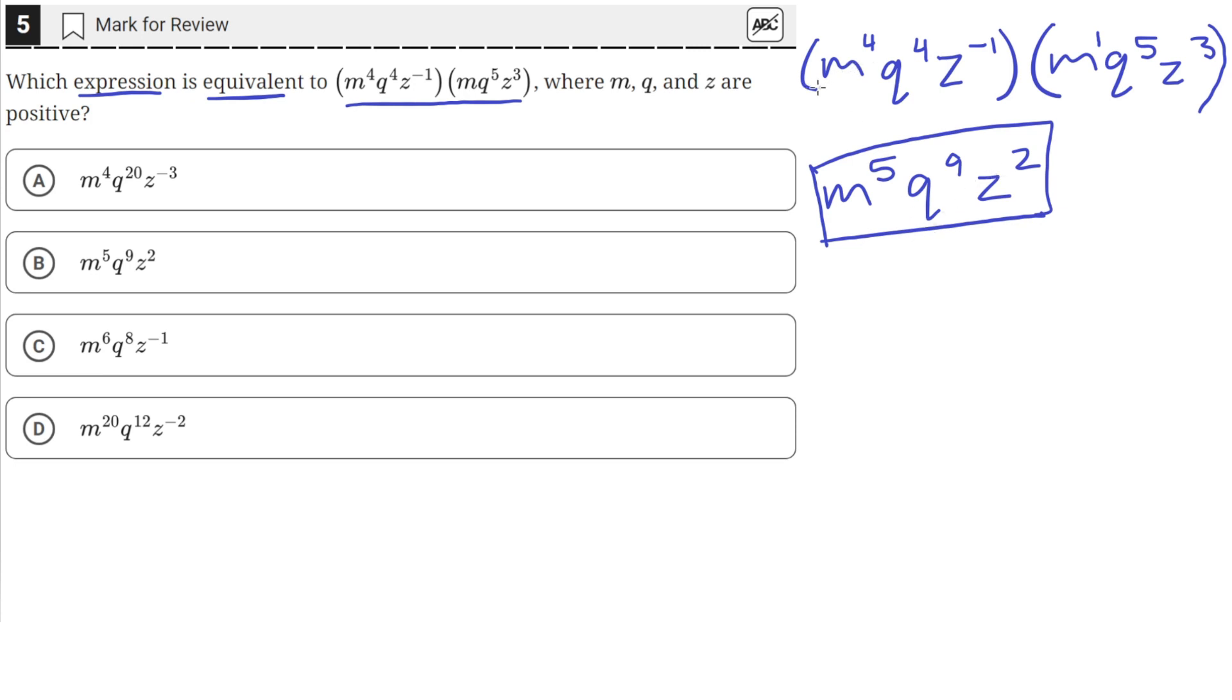We were able to just multiply these together since multiplication is commutative and these bases are the same, so we can add the exponents. The only answer choice that has this expression we just derived is answer choice B. So answer choice B is the correct answer.